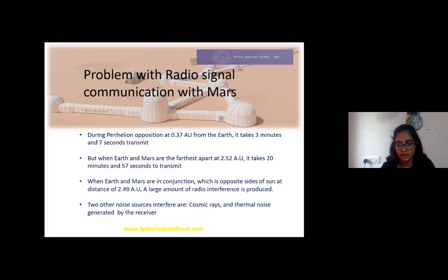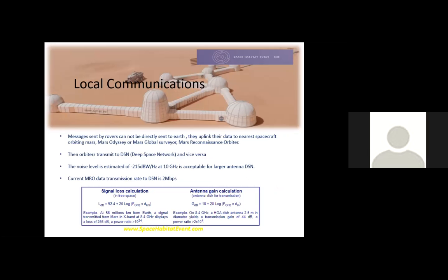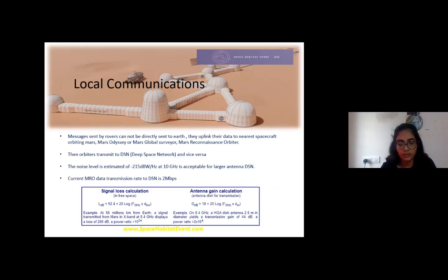How do the rovers on Mars communicate with Earth? Messages sent by the rovers are not directly sent to Earth. They first need to uplink their data to Mars orbiters like reconnaissance orbiter or odyssey orbiter. These orbiters will then send the data to the distance network which is in geosynchronous orbit of Earth. Even with this constellation communication, the data rate is 2 Mbps, which is the best we have achieved right now.